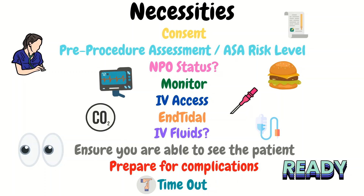Next is doing a pre-procedural assessment and the provider deciding what the ASA level is. This ASA level risk helps gauge the overall risk associated with the procedure. It goes from one through six, with one being a healthy patient, two being mild systemic disease, three being a severe systemic disease, and so forth.